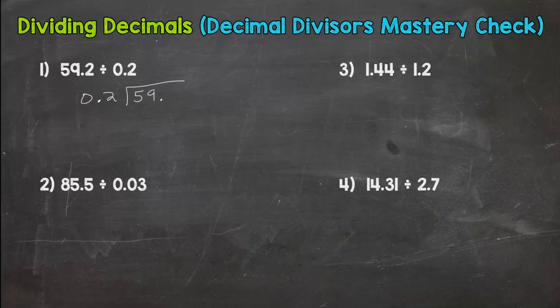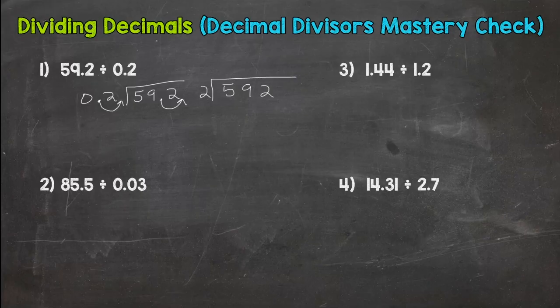So we have 59.2 divided by 0.2. Divisor is not whole so I need to multiply it by a power of 10 to make it whole or which is the same as moving this decimal. Whatever I do to the outside I need to do to the inside. So I get 592 divided by 2 that will put my decimal in the right place which comes at the end here. So I'm just going to leave it as a whole number.